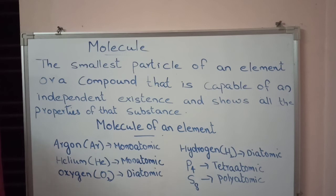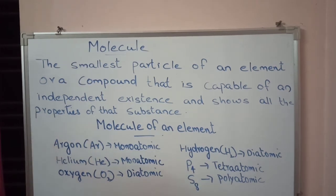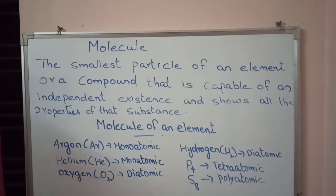The number of atoms constituting a molecule is known as its atomicity. So the atomicity of argon or helium is 1. But an oxygen molecule is formed by the combination of two oxygen atoms. A molecule of oxygen consists of two atoms of oxygen, and hence it is known as a diatomic molecule. Oxygen, hydrogen, etc. are diatomic molecules.